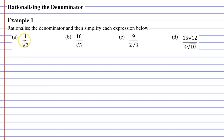You will notice that our denominator is the square root of two. We want to change this to a whole number — we want to rationalize the denominator. So, how do we do that? Well, if I have the square root of two, what should I multiply it by so that I get a whole number? It's quite simple: you multiply it by itself, because the square root of two times the square root of two gives you the whole number two. So, what we need to do is multiply our denominator in question A by itself.